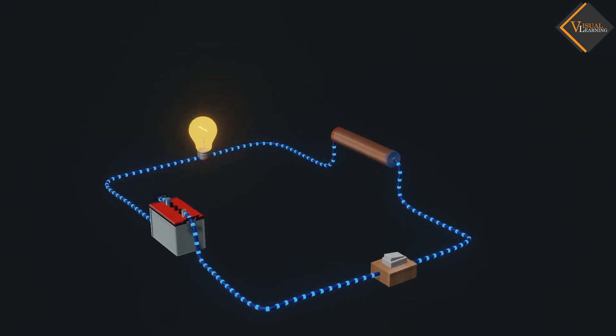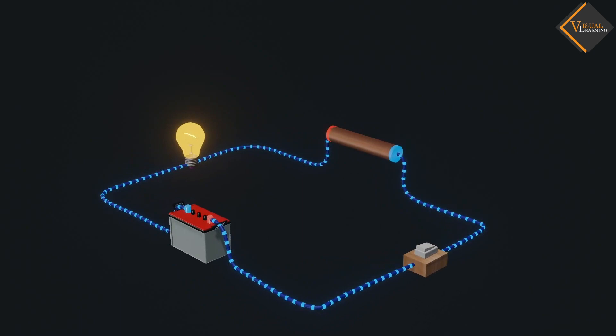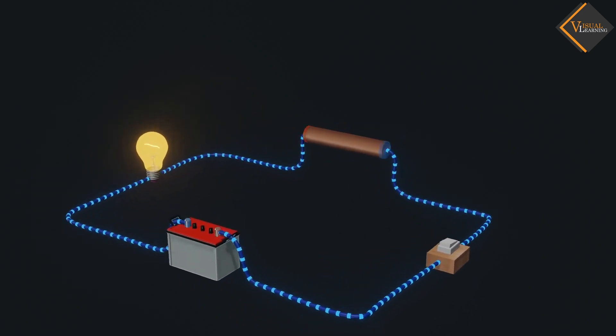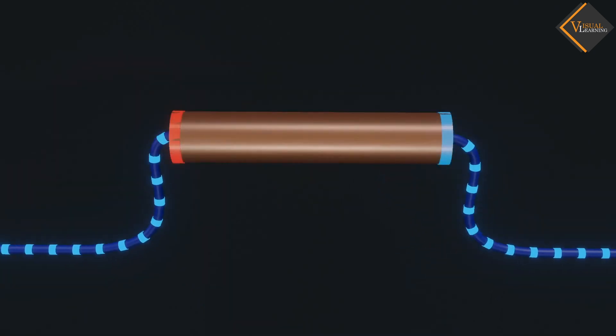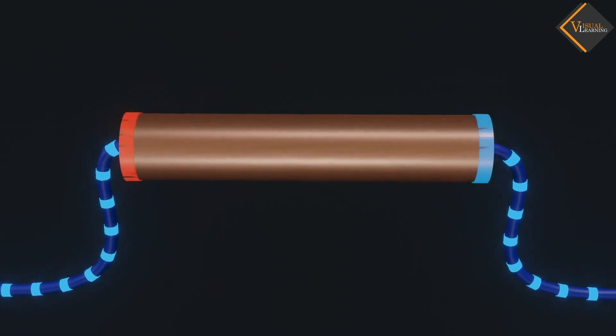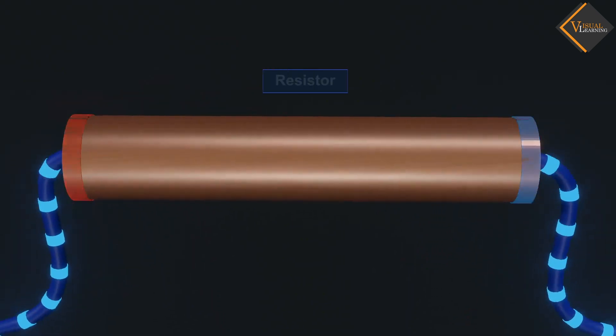In an electric circuit, every component offers resistance to the current. But an electric component which offers a specific value of resistance is considered as a resistor.